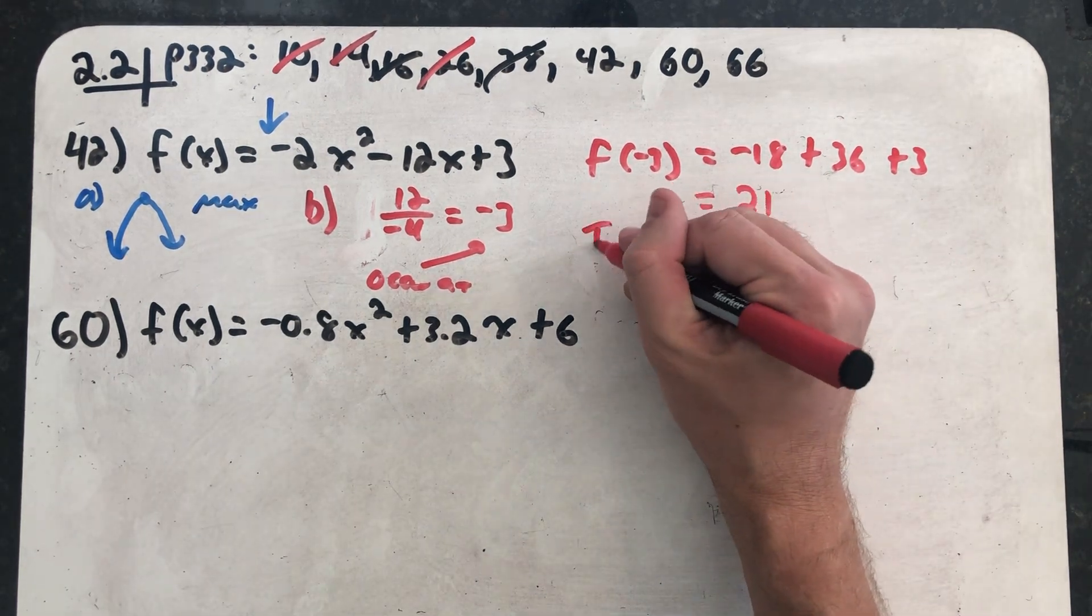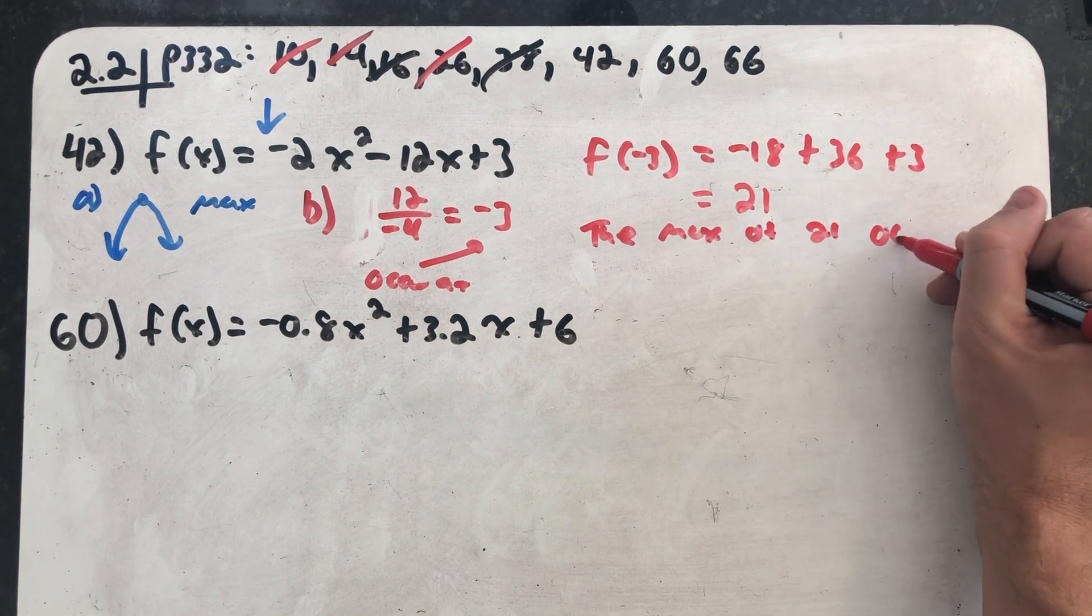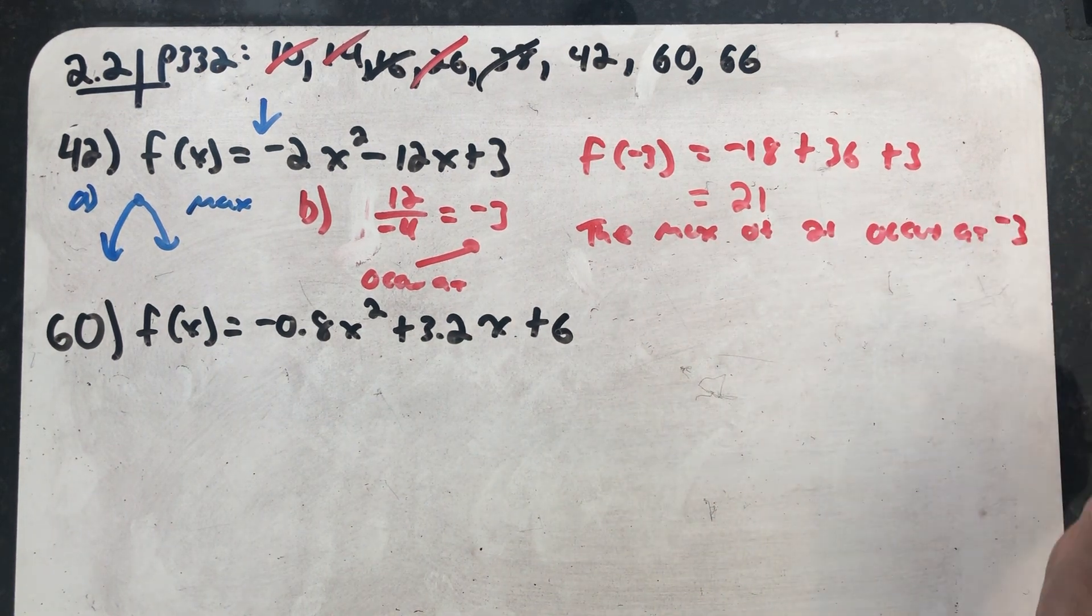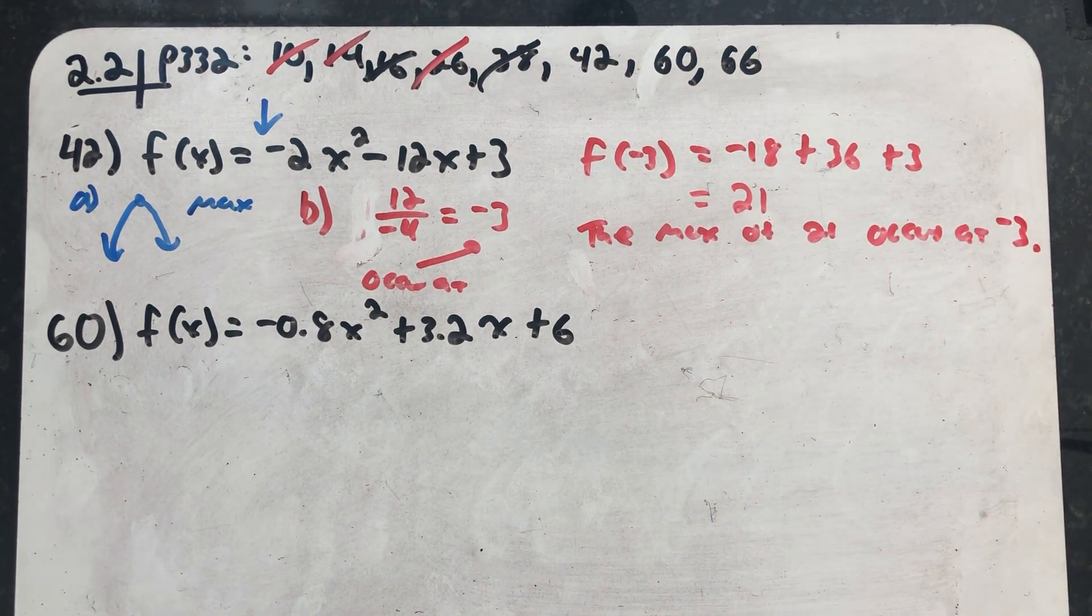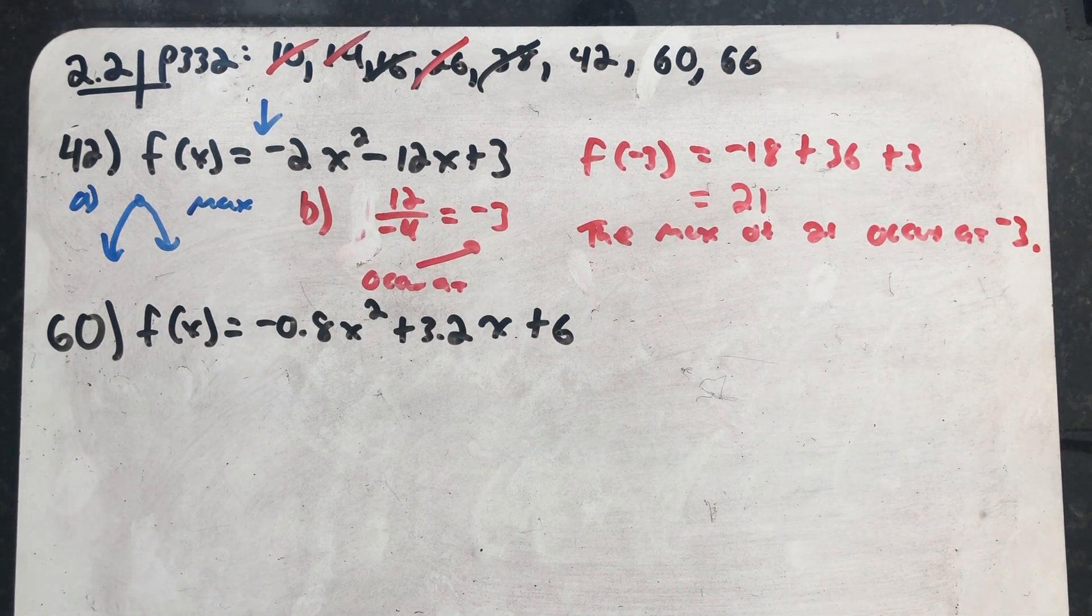The max of 21 occurs at x equals minus 3. The maximum is the y-value, and it occurs at the x-value. One final thing.